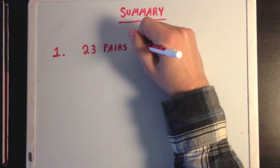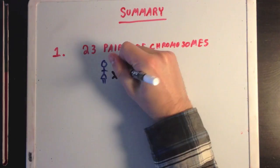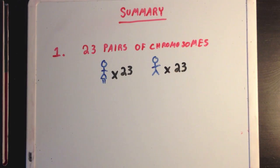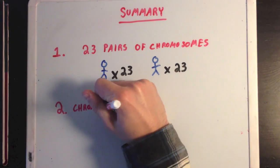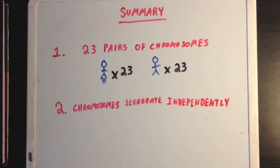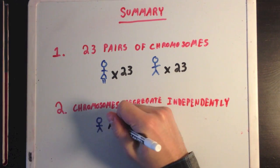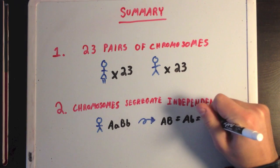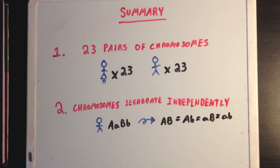So what did we learn? First, we reviewed the idea that human cells contain 23 maternal and 23 paternal copies of each chromosome. Second, we learned that the law of independent assortment tells us that genes on different chromosomes will segregate independently from one another, leading to equal formation of all possible gametes.